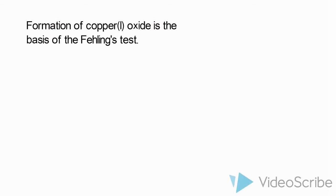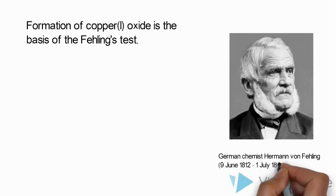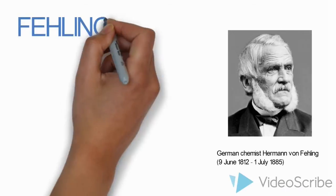Formation of copper 1 oxide is the basis of the Fehling test. It was developed by German chemist Hermann von Fehling in 1849.